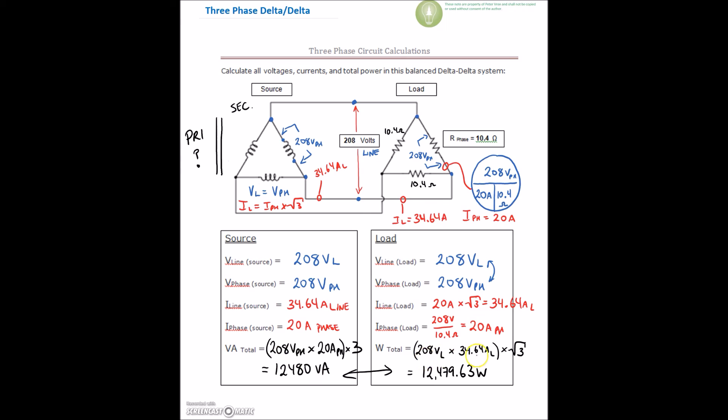In order to find our VA value, we took our line voltage times line current times root 3, and it gave us essentially 12,480. Or we can take our single phase values. 208 volts on the phase times 20 amps on the phase times 3 gives me 12,480 VA.